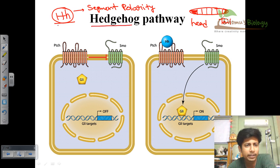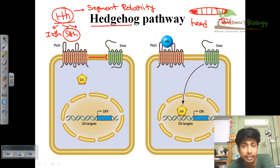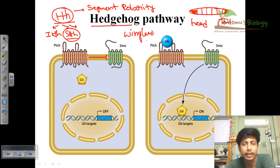There are three different kinds of hedgehog — IHH, SHH, and so on. Among them, SHH is the most studied one, called sonic hedgehog. Sonic hedgehog is responsible for interacting with another gene and another signaling system called wingless.